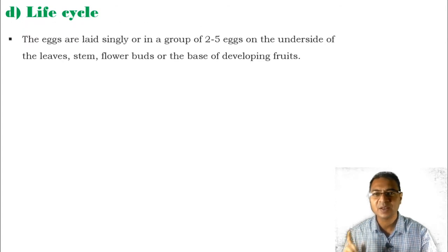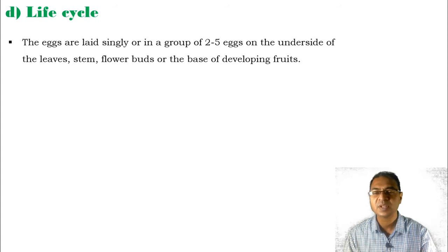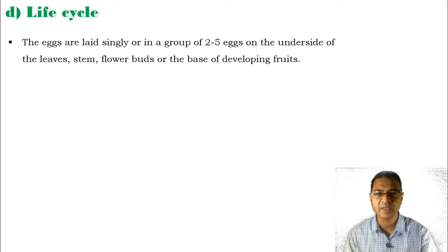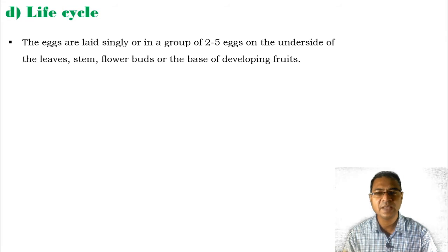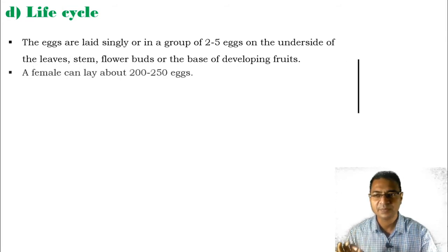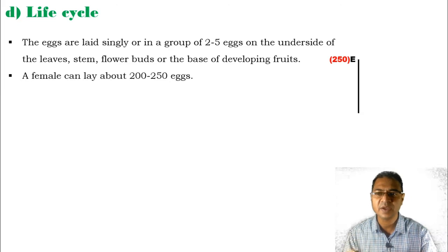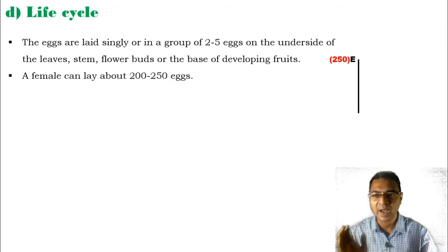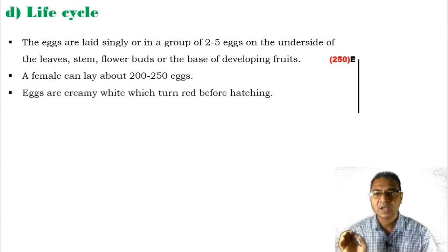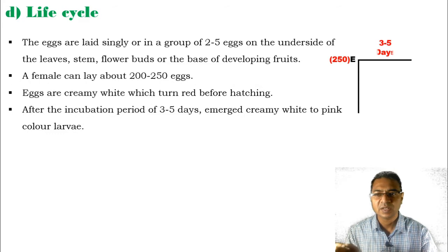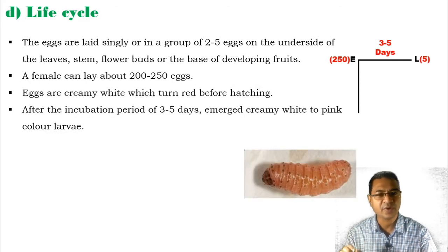The life cycle of the brinjal shoot or fruit borer: eggs are laid singly or in groups of 2 to 5 eggs on the underside of leaves, stem, flower buds, or the base of developing fruits. A female after mating can lay about 200 to 250 eggs on the underside of these plant parts. The incubation period is about 3 to 5 days.